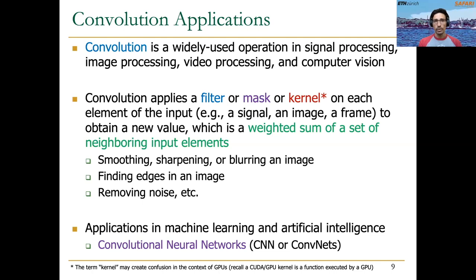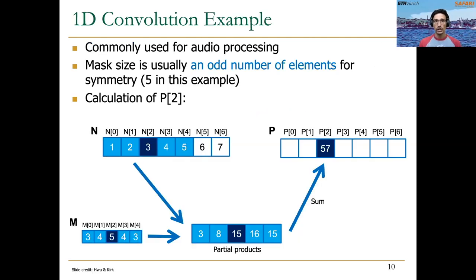The next parallel primitive we covered was convolution, a widely used operation in signal processing, image processing, video processing, computer vision, and these days very much used in artificial intelligence and machine learning in convolutional neural networks. In convolution, we apply a filter or mask on each element of the input and obtain an output value that is the weighted sum of a set of neighboring input elements. This is what we do in 1D convolution — we apply the mask on all elements of the input array and reduce the partial products to obtain the output value.